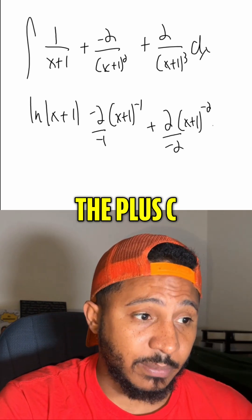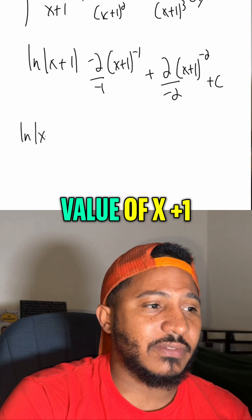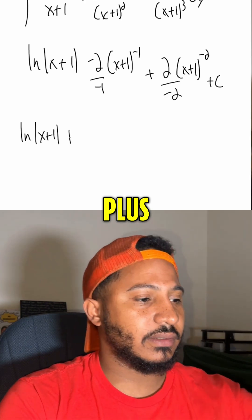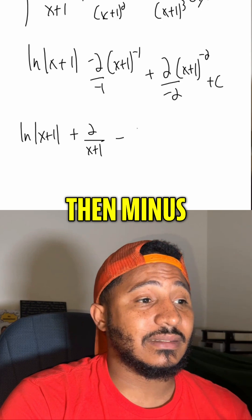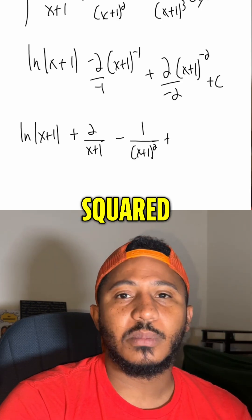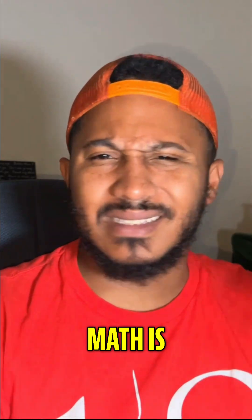Now that we're done integrating, don't forget the plus c. So finally, we get ln of the absolute value of x plus 1 plus 2 over x plus 1 then minus 1 over x plus 1 quantity squared plus c. Always remember, math is everywhere.